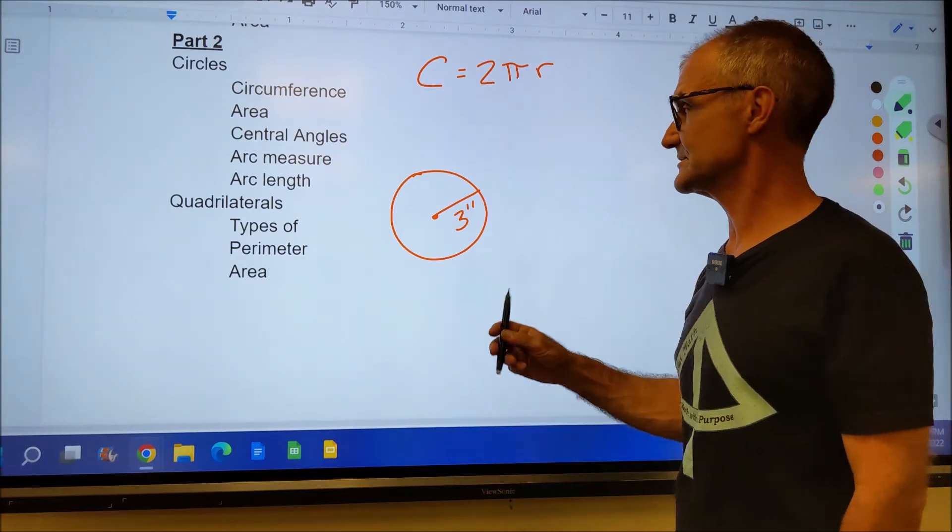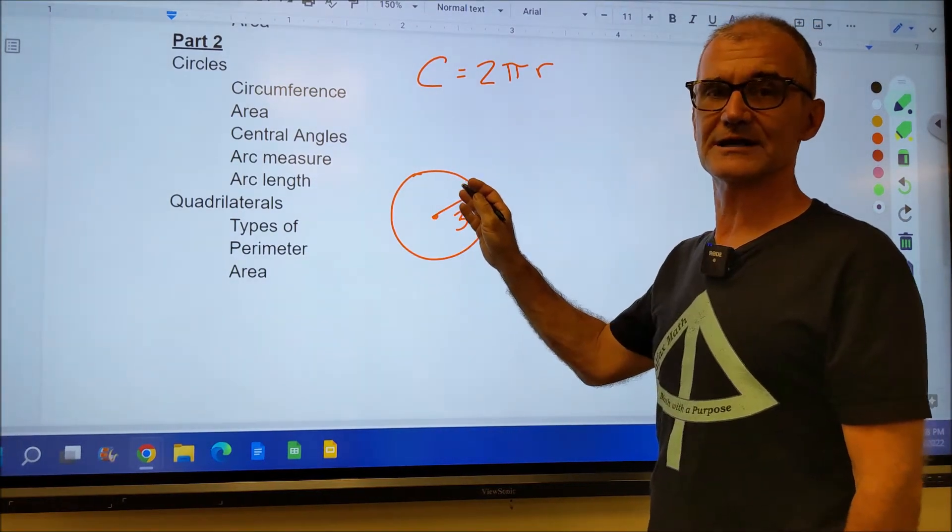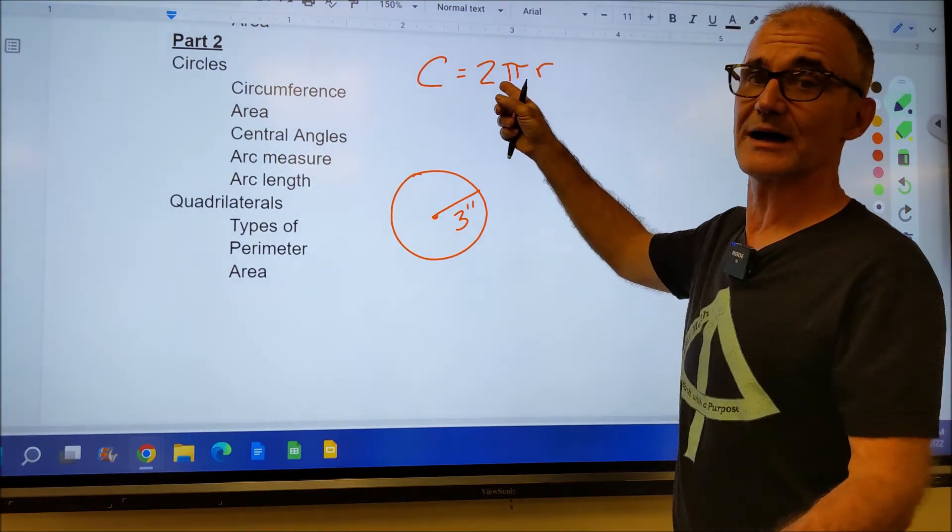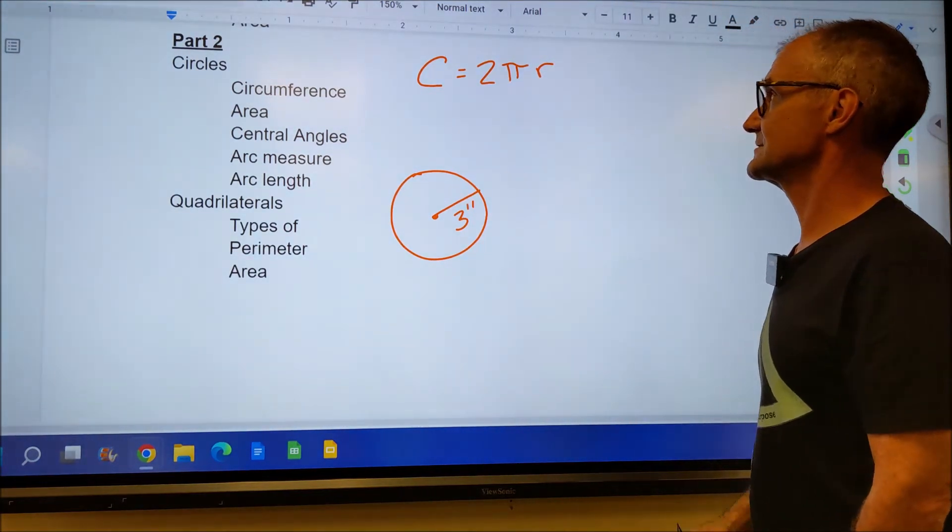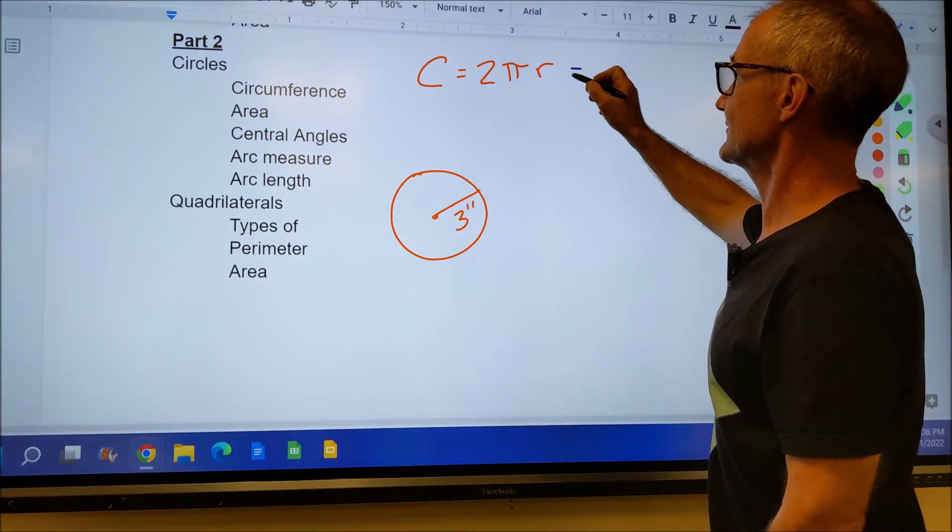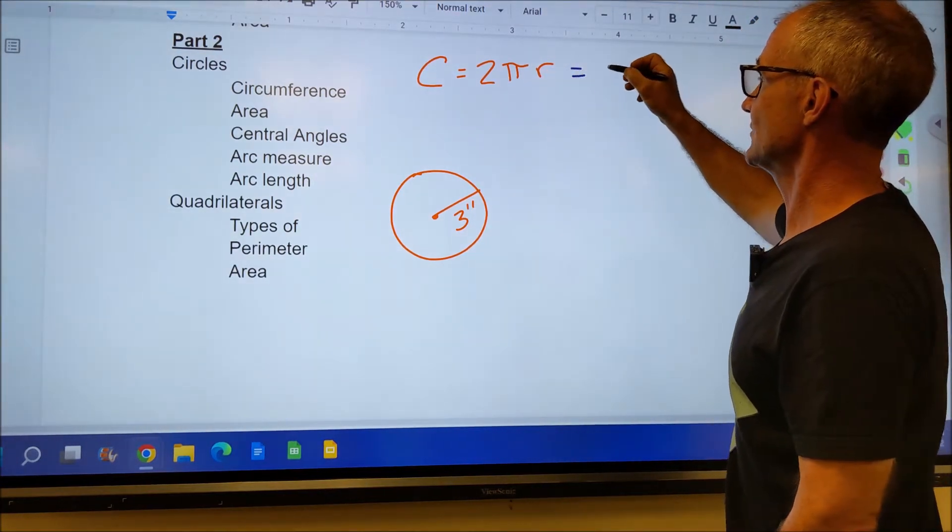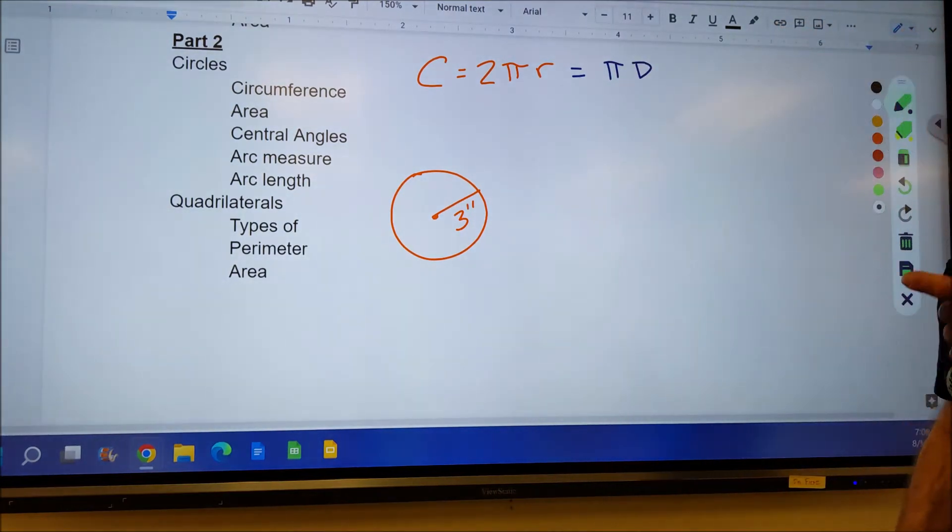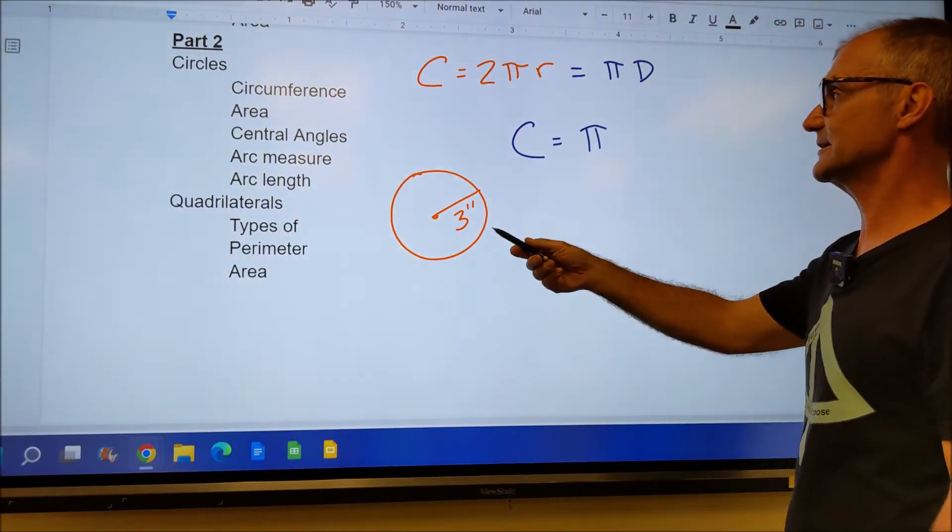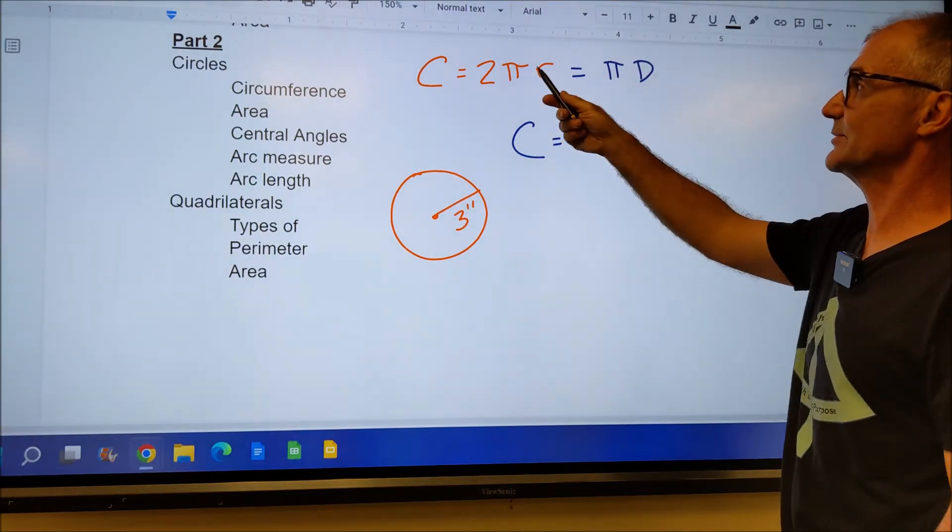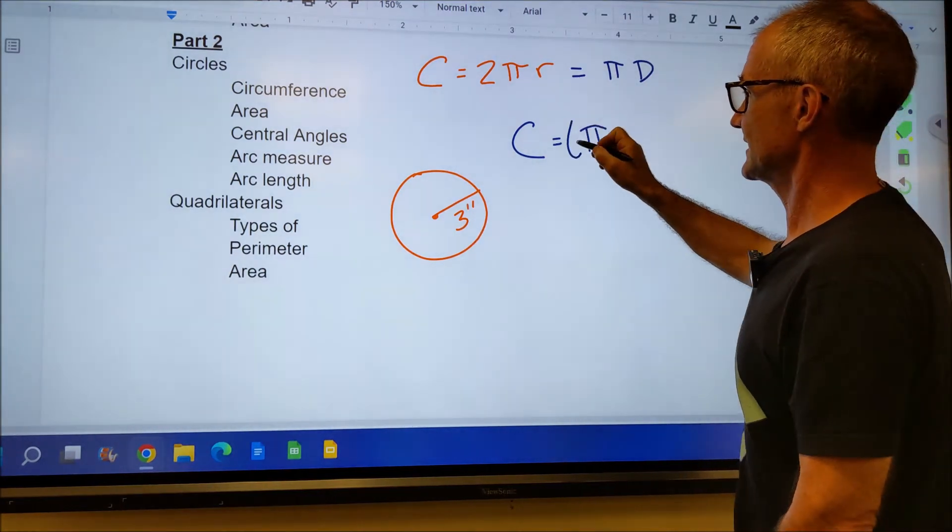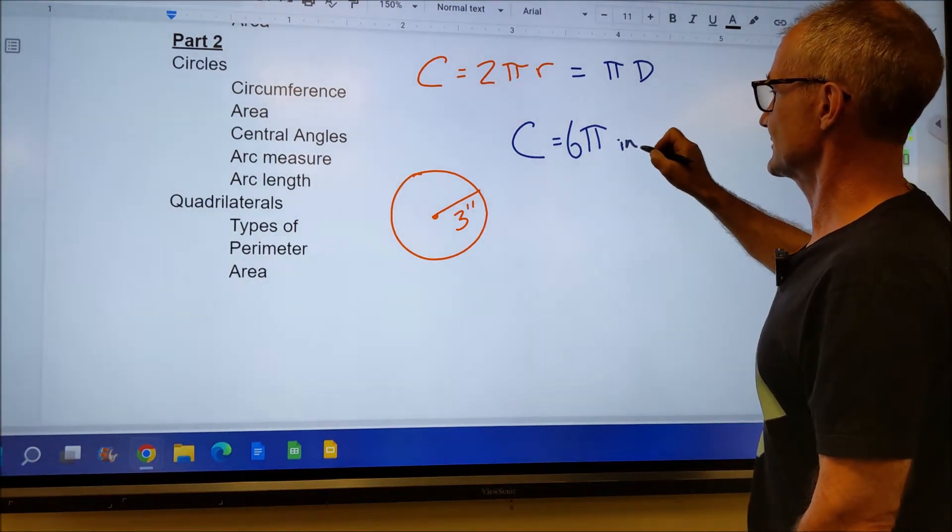Let's take a look at the circumference. Circumference in a circle is a length all the way around the outside. So the equation for circumference, capital C, is equal to 2 times pi times r radius. 2 times the radius is the same thing as the diameter. So circumference could also be written as pi times diameter. The circumference of this circle is 2 pi r, 2 times the radius 3 is 6, or diameter which is 6, so 6 pi inches.